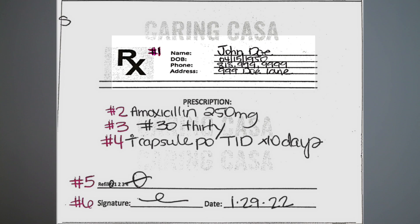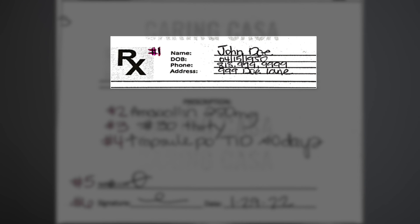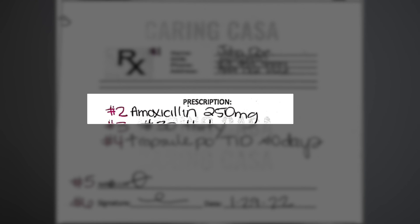Let's break down the components of what a prescription includes. In this first example, you're going to see numbers labeled one through six. For number one, it's going to have patient demographic information — you always want to make sure you have the patient's first and last name, date of birth, phone number, and address. Number two, right below it where it says prescription in caps, you have the name of the medication and the dosage form — so this will be amoxicillin 250 milligrams.